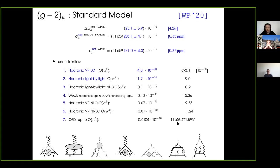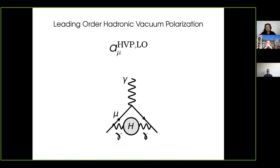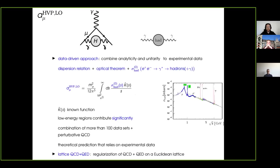The QED contribution is of course the largest contribution. It has a very small error, thanks to a remarkable progress in computations that have allowed the computation of the five-loop contribution. Let me concentrate on the most problematic part associated to the large uncertainty. The hadronic vacuum polarization leading order contribution is related to a hadronic blob — a two-point function with vector currents of quarks associated to a quark-antiquark loop in the non-perturbative regime of QCD.